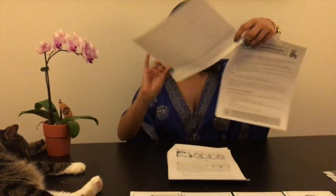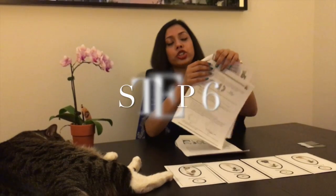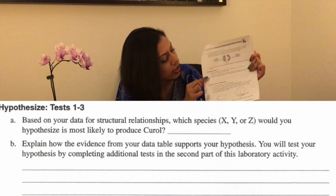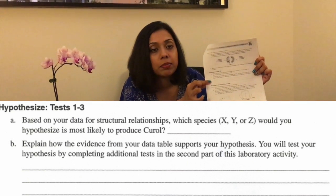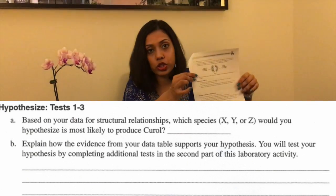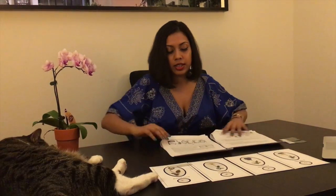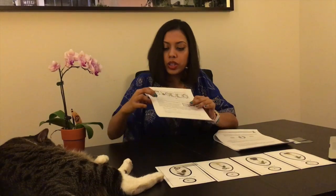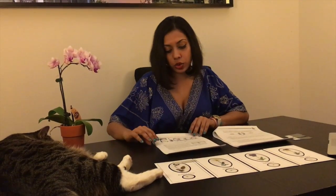Once students have completed the stem comparison, they go back to page two to form a hypothesis based on the structural components alone. The first question asks which plant they think is most related to Botanicurus, and they will form a hypothesis based on their prediction. This is step six. Then they move on to step seven, which is paper chromatography. It helps to set up the chromatography equipment while students are on steps five and six.